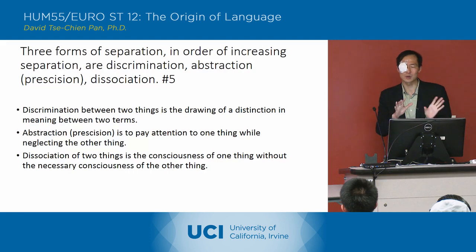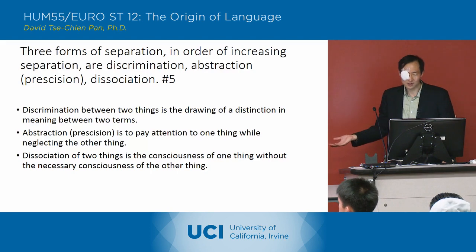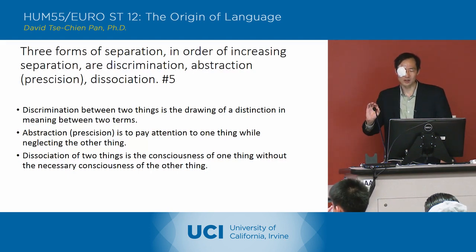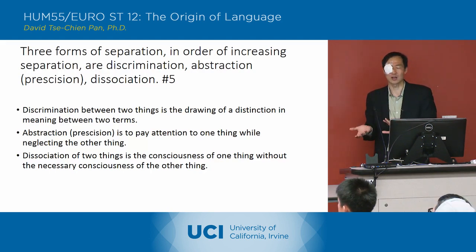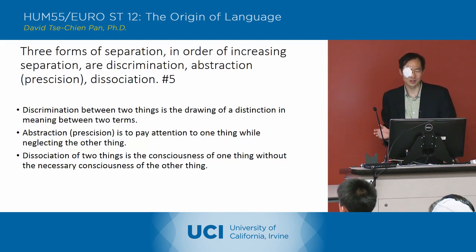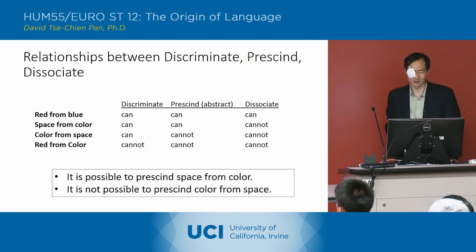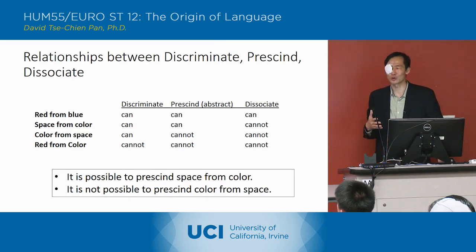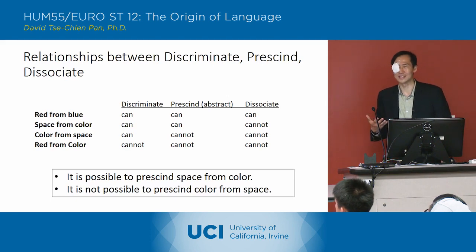Discrimination separates two things by drawing a distinction in the meaning of the two terms. Dissociation means two things are separated such that you can have a consciousness of one without the necessary consciousness of the other. And then precision, or what he also calls abstraction, is to pay attention to one thing while neglecting the other.